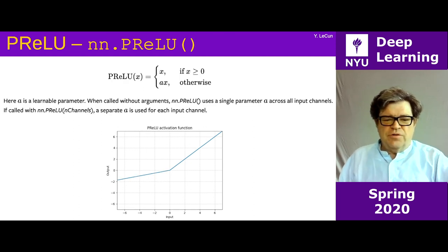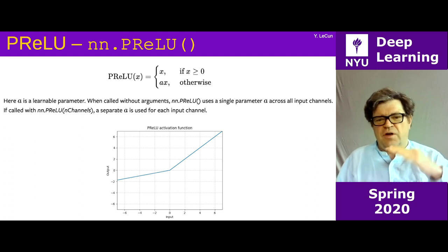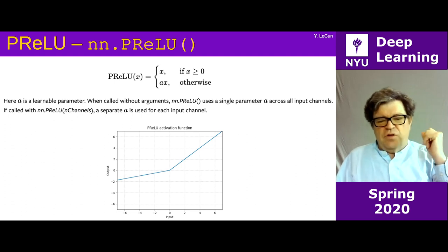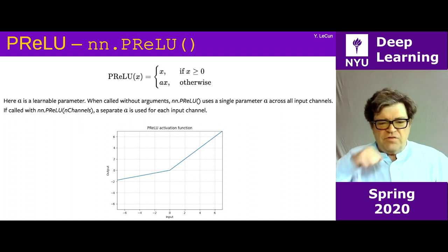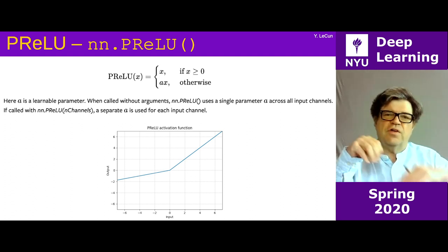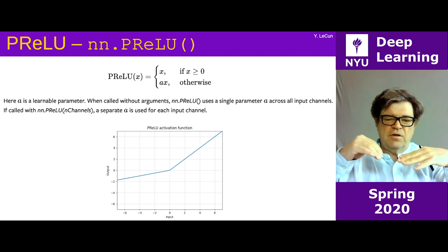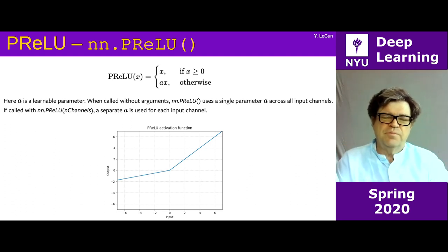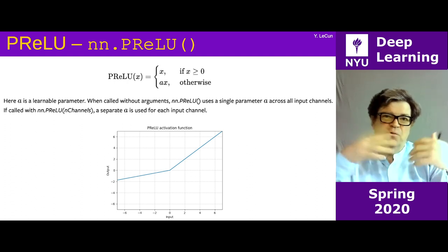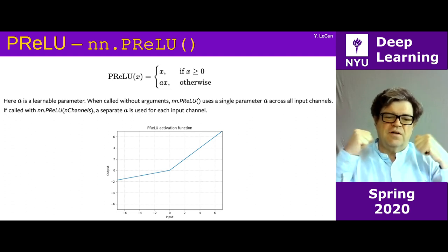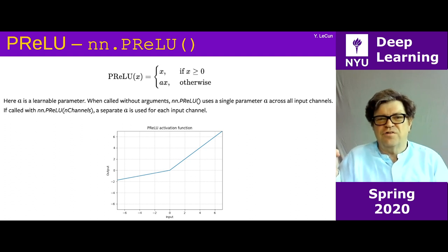PReLU is fairly similar except the slope on the negative side can be just about anything. What's interesting about all those functions is that they are scale-invariant: you can multiply the signal by two and the output will also be multiplied by two but otherwise unchanged. There is no intrinsic scale in those functions because there is only one non-linearity and it's a sharp one.